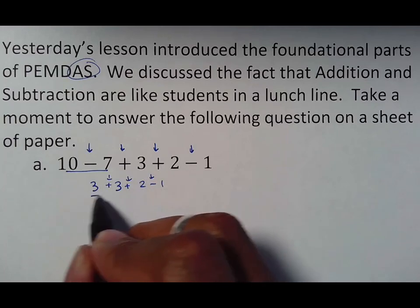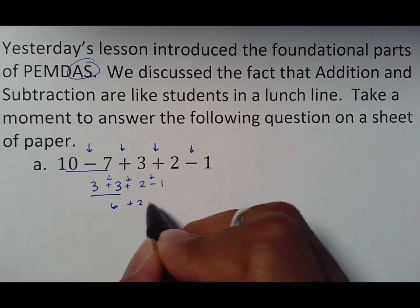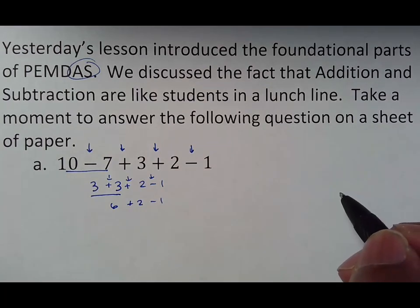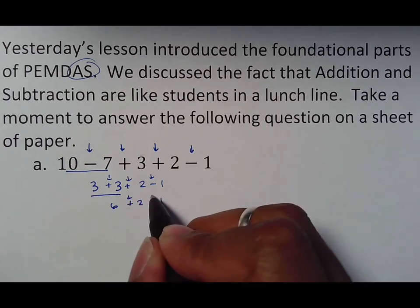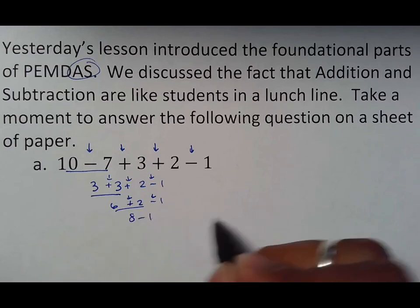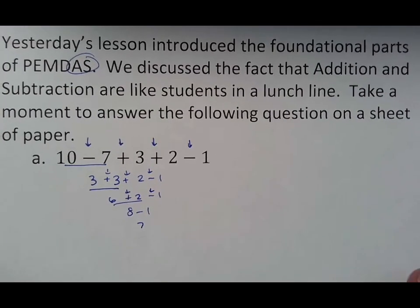Well, again, they're on the same level. So 3 plus 3 is 6. Copy the rest: plus 2, minus 1. Once again, we're focusing on the operation. 6 plus 2 turns into 8. 8 minus 1 turns into 7. That should be your answer.